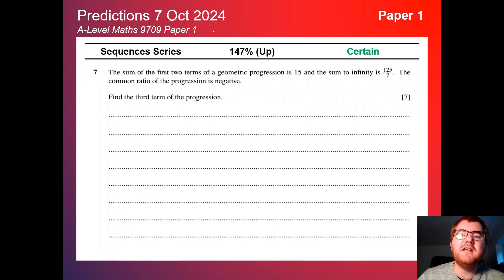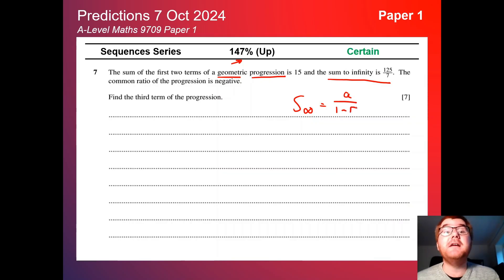On to sequences and series, up slightly here at 147%, so coming up quite often. You need to know the definitions of geometric progression, arithmetic progression as well, working with the sum to infinity formula. Remember, the sum to infinity formula is A over 1 minus R. That is important for geometric series. You can get a whopping 7 marks, so in terms of weighting, these sequences series questions when they do come up can be lots of marks for your exam.